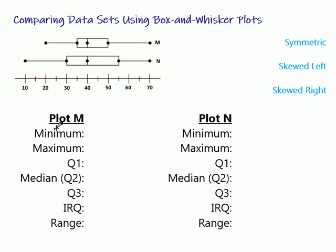So the first thing I want to talk about here is the different pieces of a box and whisker plot. This might be a review, but it's really important that we can pick out the parts of the box and whisker plot and know what information it is giving us. So for plot M, let's find the minimum first of all. The minimum value is the one that's furthest to the left, and we're at 20 for plot M.